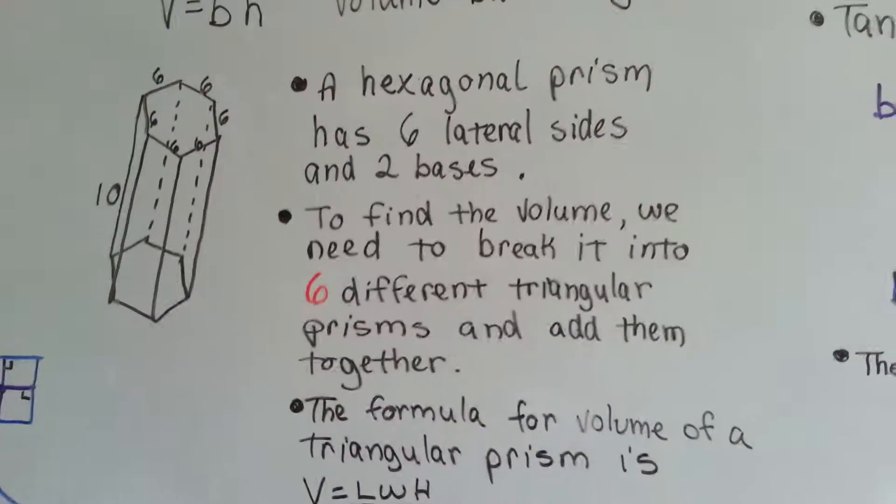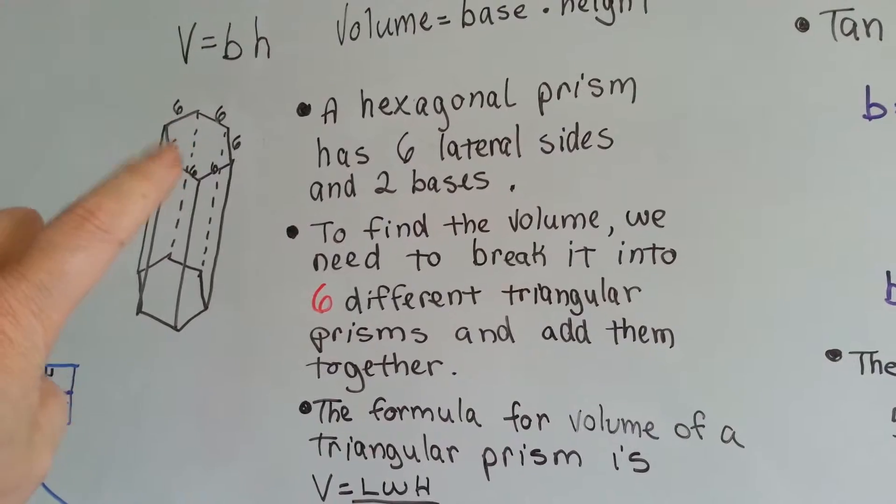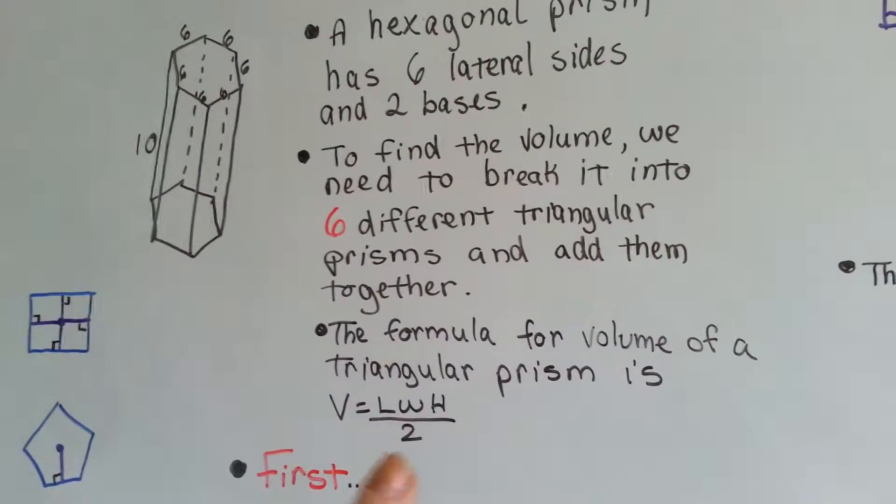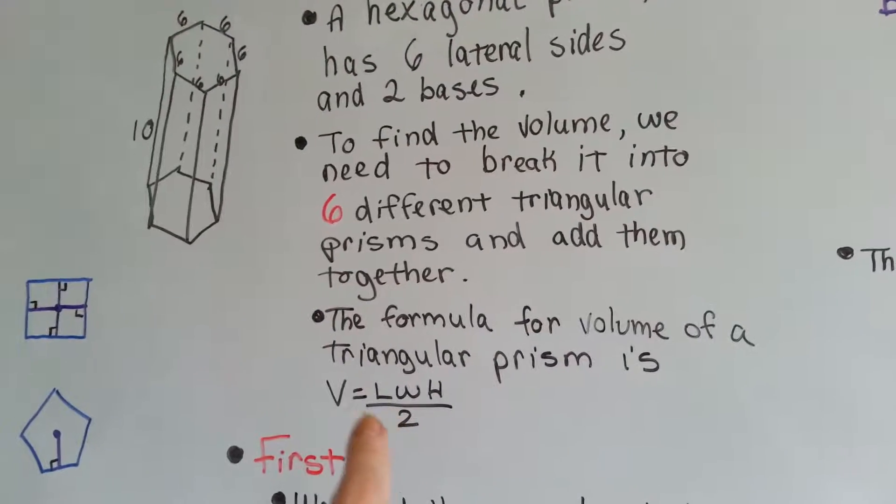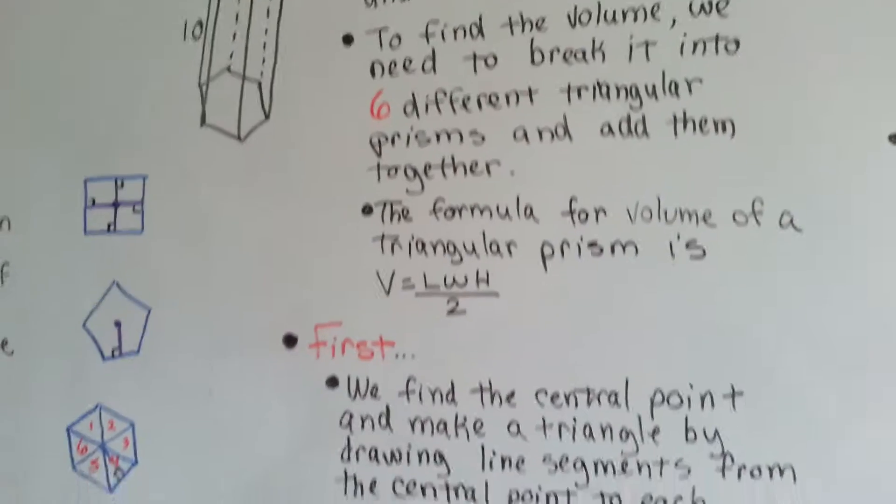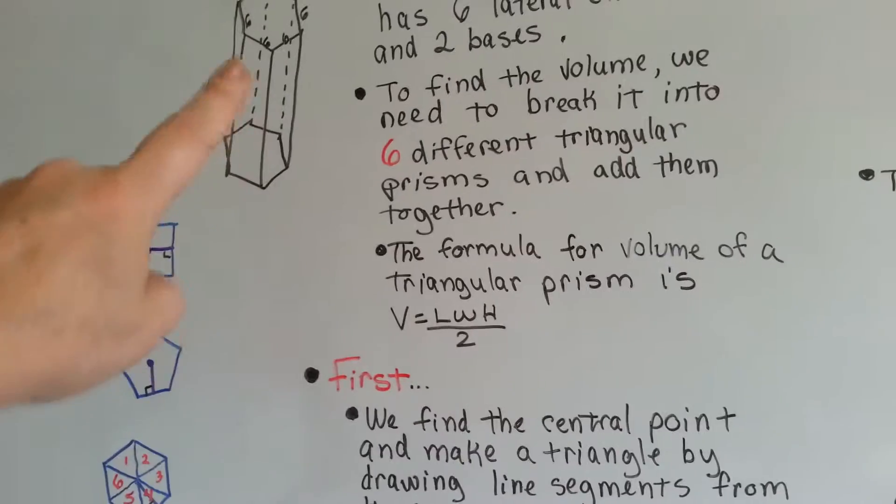To find the volume, we need to break it into six different triangular prisms and add them together. It's that simple. Well, the formula for a triangular prism is volume equals length times width times height divided by two. Look at this hexagon right here.